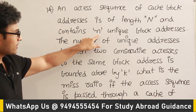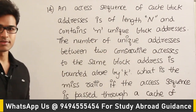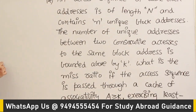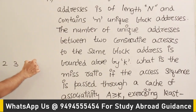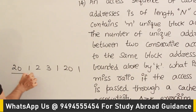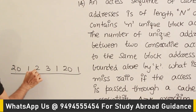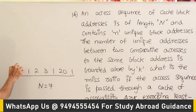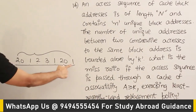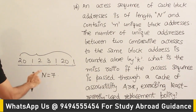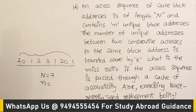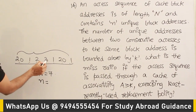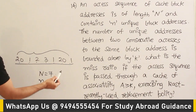This string contains small n unique block addresses. For example, a sequence like 20, 1, 2, 3, 1, 20, 1 has length N (capital N = 7 in this example). Small n is the number of unique references — 20, 1, 2, 3 — so n = 4 unique references.